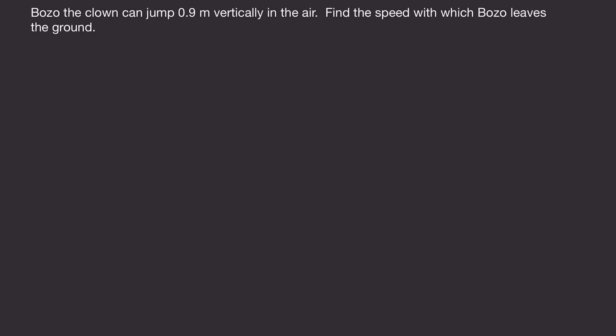So in this first problem, we have Bozo the Clown that can jump 0.9 meters vertically in the air, and we're asked to find the speed with which Bozo leaves the ground. This is a problem that you could solve using kinematics, but we want to see how you would solve this problem using conservation of energy.